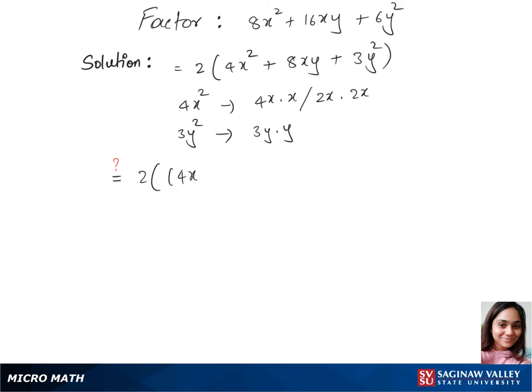2 times (4x plus 3y) times (x plus y). When we multiply this we get 2 times (4x² plus 7xy plus 3y²), and this does not match up with our top trinomial. Let's do our second guess.